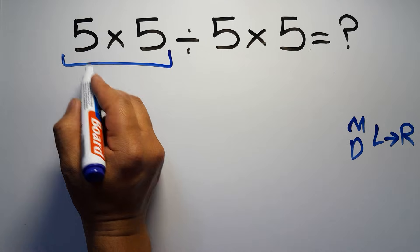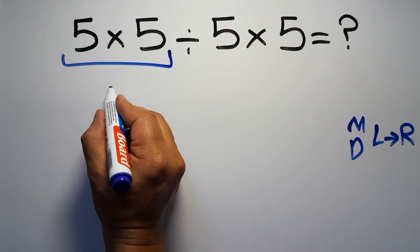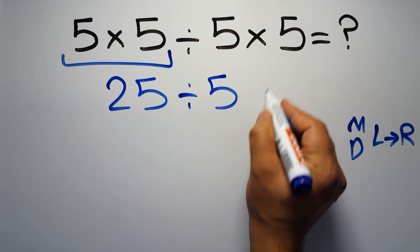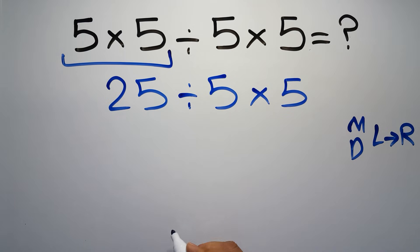So first this multiplication: 5 times 5 gives us 25, so 25 divided by 5, then times 5.